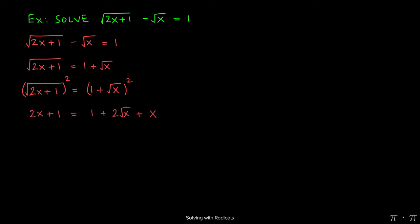On the right-hand side, we use the special product formula, or simply FOIL, to get 1 plus 2 times the square root of x plus x.